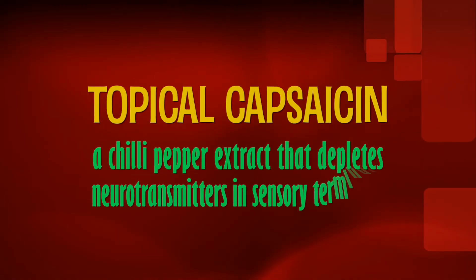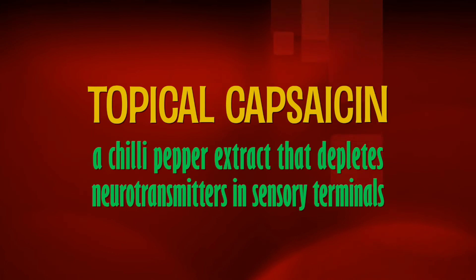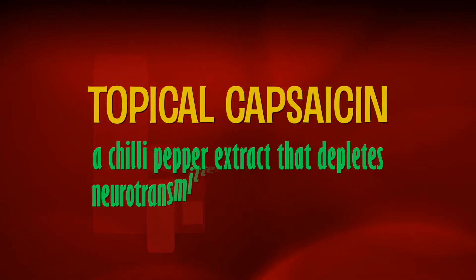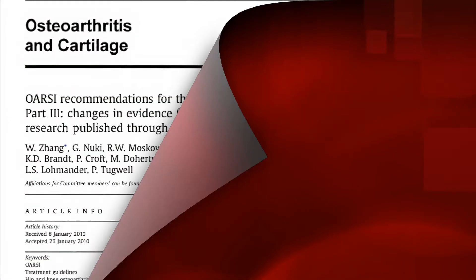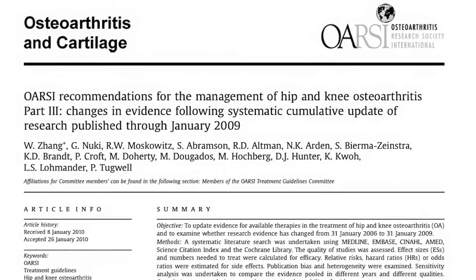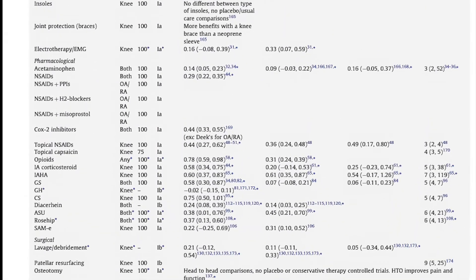Topical capsaicin is a chili pepper extract that depletes neurotransmitters in sensory terminals and attenuates the central transmission of peripheral pain impulses from the joint. It is generally recommended as a supplementary analgesic for hand and knee OA and avoids systemic toxicity.